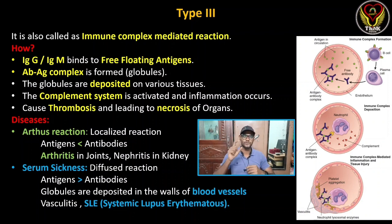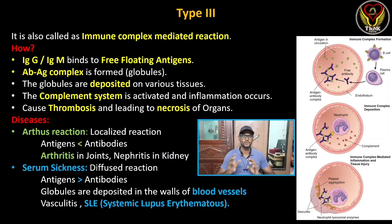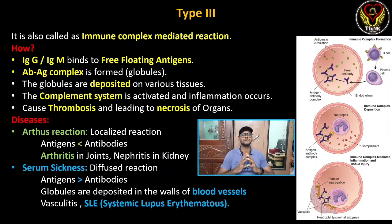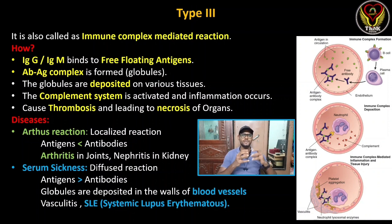We call it immune. How do we call the Type 3 hypersensitivity reaction? It is similar to Type 2 — it involves IgG and IgM. IgG and IgM play the main role. What is the difference? It binds free antigen — we bind free antigen.